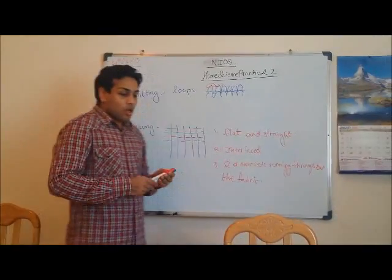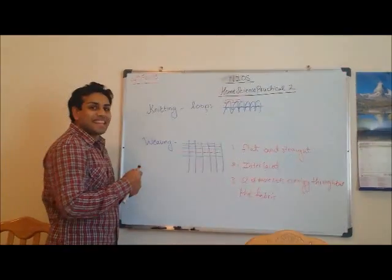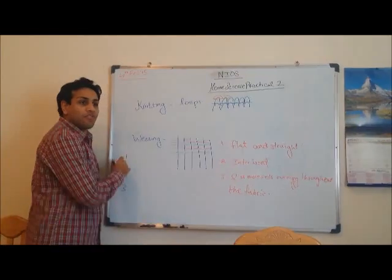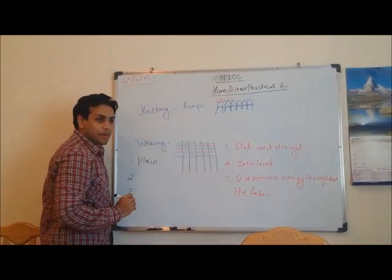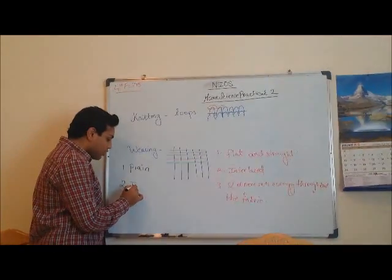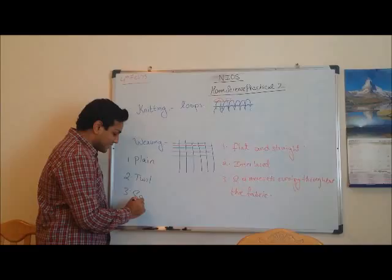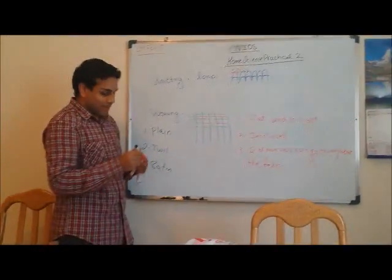Then you need to know the types of weaving. We have got three types of weaving: one, two and three. The first one is called plain weave, commonly used everywhere. Second one is called twill. And third one is called satin. Plain weave, twill weave and satin weave.